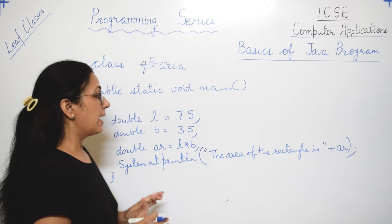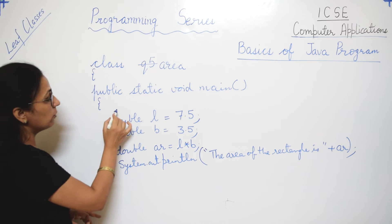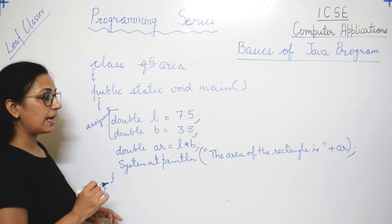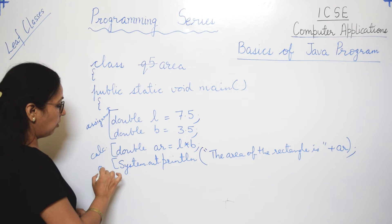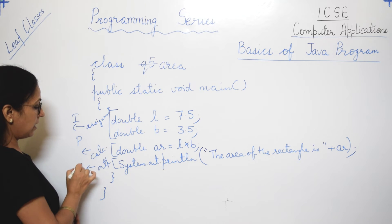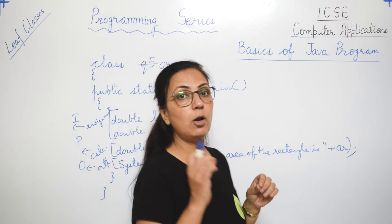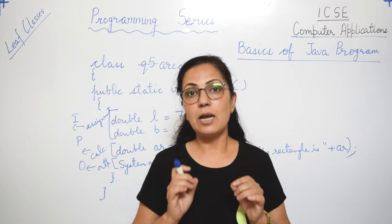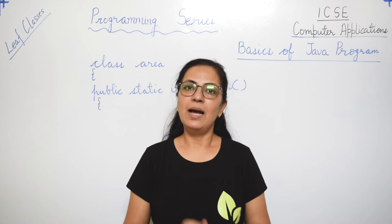The output will display the message 'The area of the rectangle is' followed by the calculated value stored in 'ar'. After that we close main and then close the class body. So in this program: assignment is the input, the formula calculation is the process, and the print statement is the output. All programs work on this principle of input, process, and output.